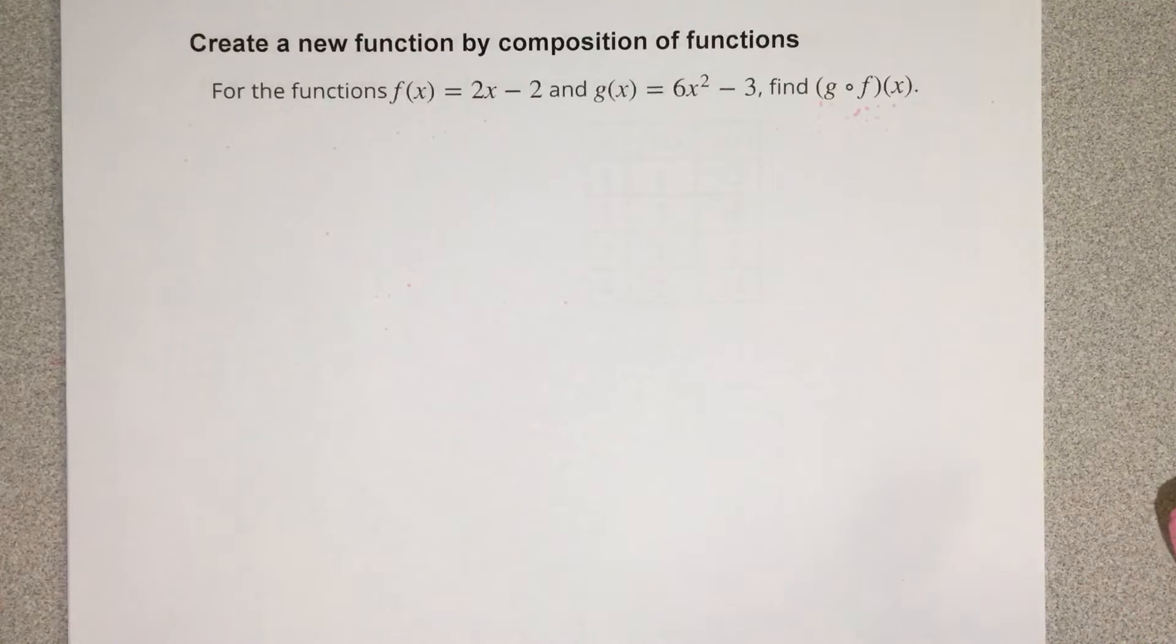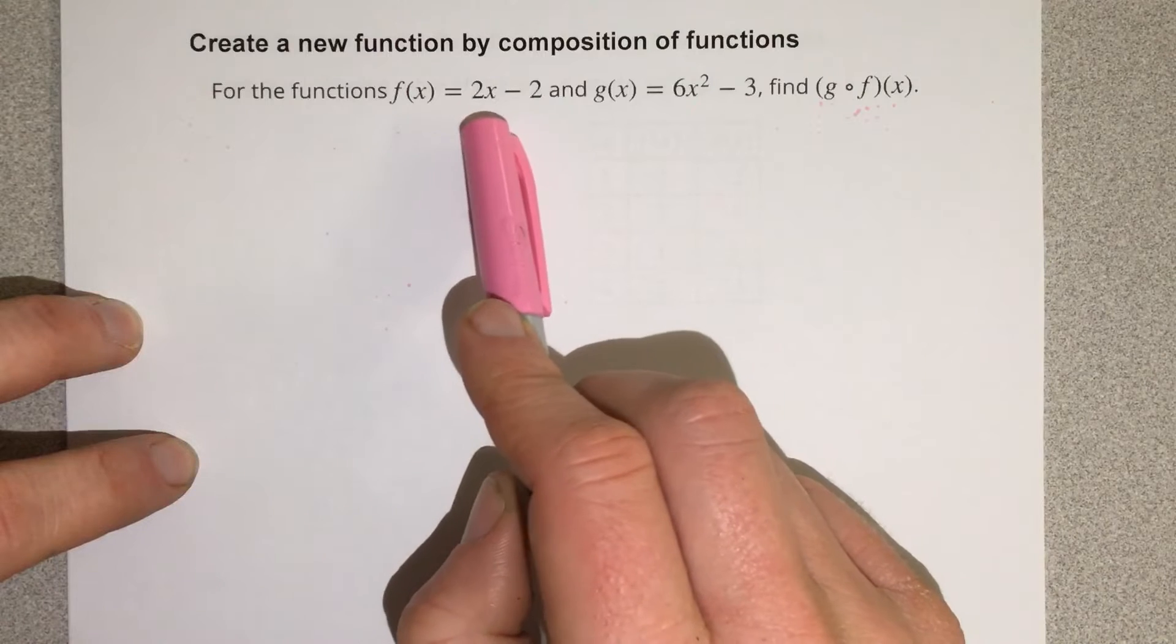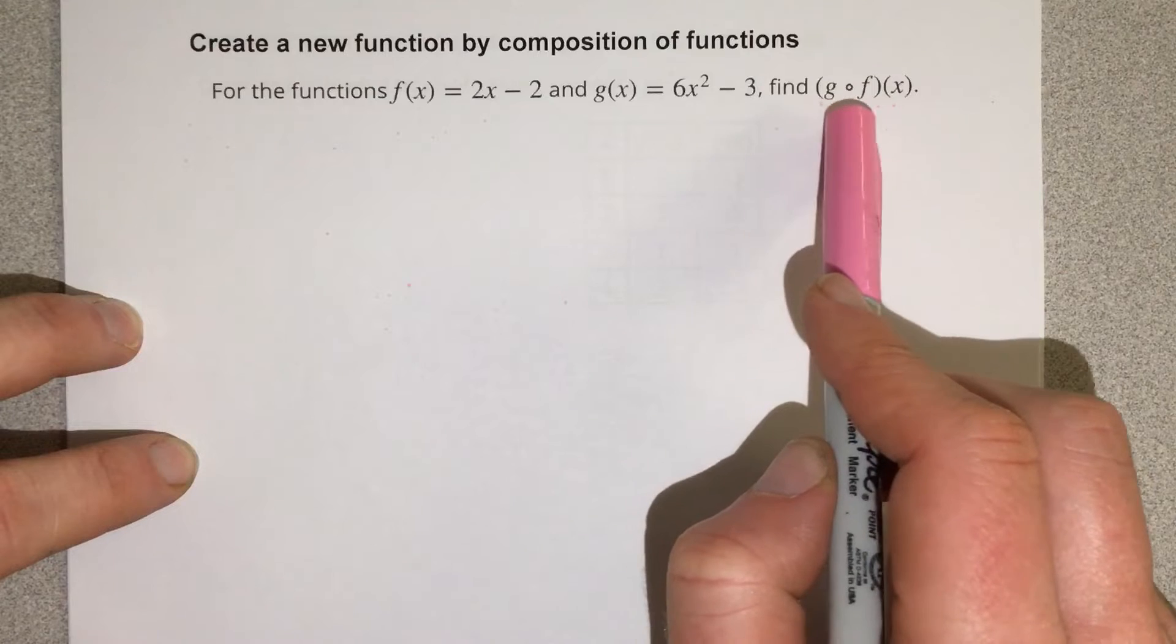In this video, we're going to create a new function by composition of functions. For the functions f of x equals 2x minus 2 and g of x equals 6x squared minus 3, it says find g of f of x.